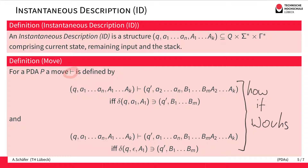An alternative is a move that does not consume something from the input — an epsilon transition. If the automaton allows an epsilon transition that leads to Q', we end up in a new ID where we have changed from Q to Q', but did not consume anything from the input so the next symbol is still A1. We have replaced A1 — the stack top, which is the leftmost letter in our notation — by B1 to BM, and the rest of the stack remains the same.